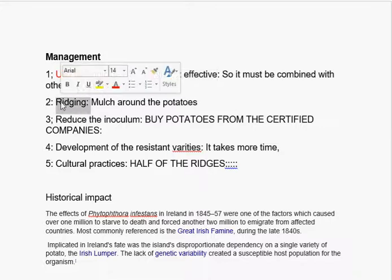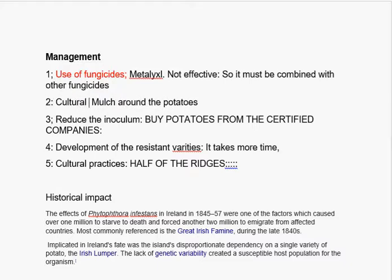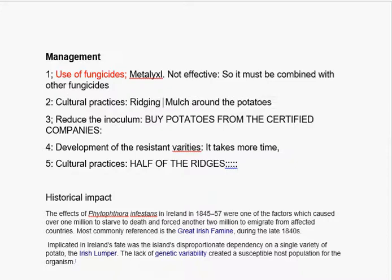The second control method is cultural practices. Among these cultural practices, ridging is very important. Ridging means you have to put mulch around the potato-prone area. If you put the mulch, then the movement of the pathogen will be reduced, so there will be less chance of disease. Cultural practices also include spraying less water — you have to give water only up to half of the ridge.